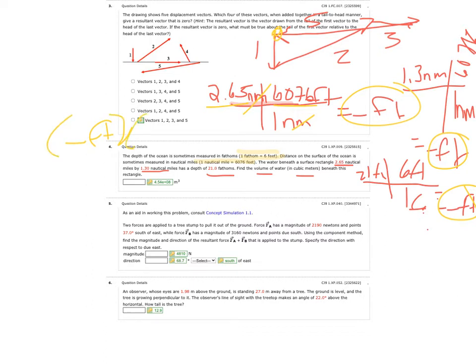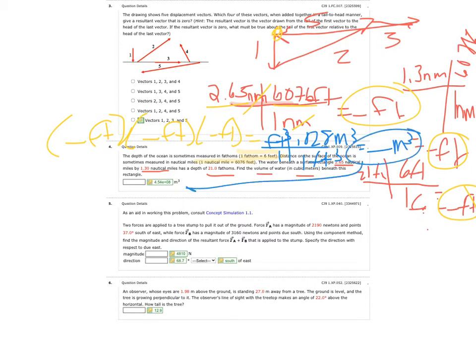Multiply all three feet measurements together and you get a result in feet cubed. Then convert using the fact that 0.028 cubic meters equals one cubic foot, and you end up with your answer in cubic meters. Everybody's answer is different so I'm not going to plug numbers into the calculator.